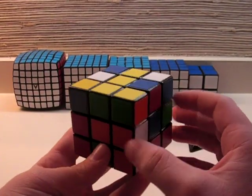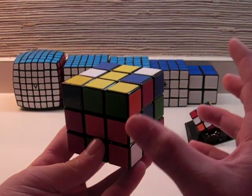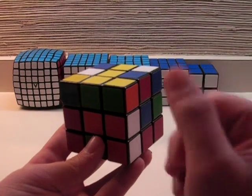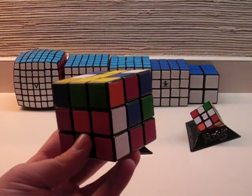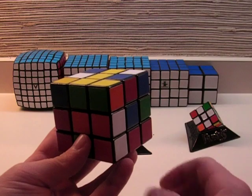As you've just seen in the notation video, you were taught the six different sides that can be turned independently from the other ones. And there are three different kinds of pieces that you should know about.